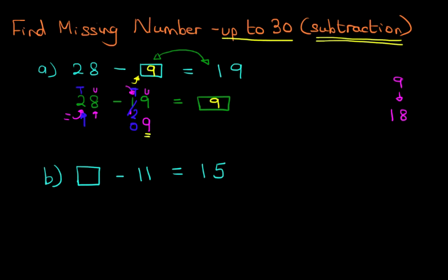Here, we've got the missing number minus 11 equals 15. So, what do we do? We need to get the box, the missing number on one side of the equal sign. We need to get the numbers on the other side. So, what do we do? We're going to take the 11 and we're going to move it over here.